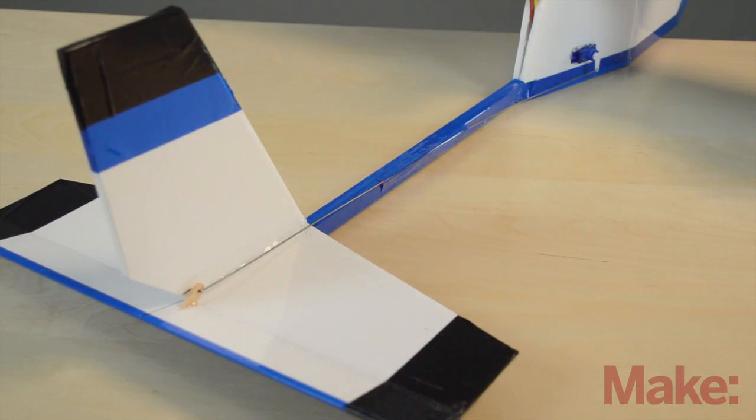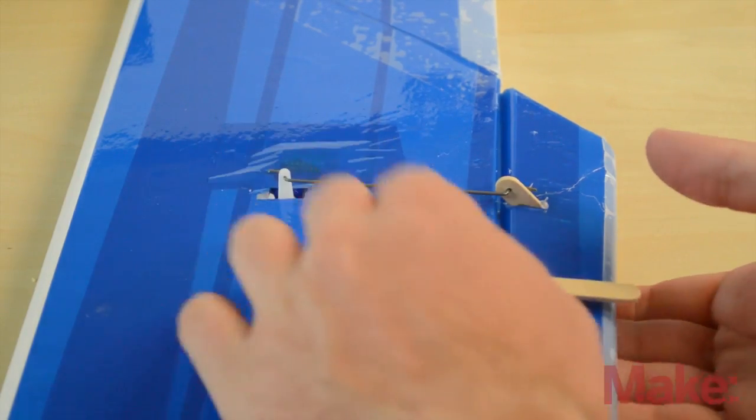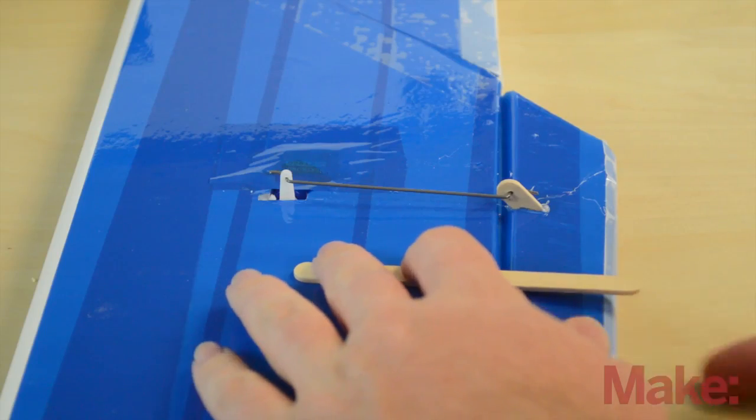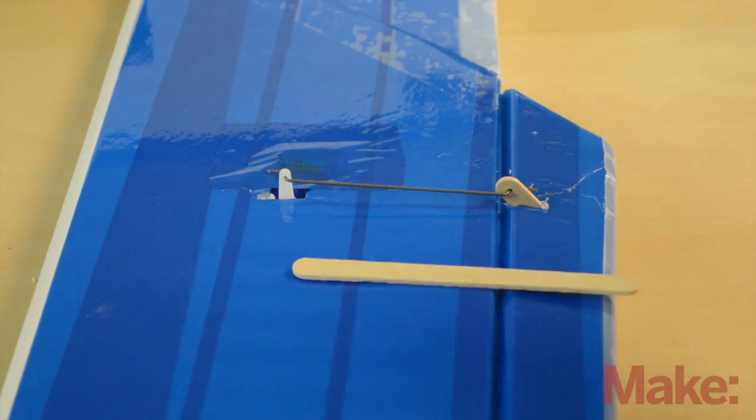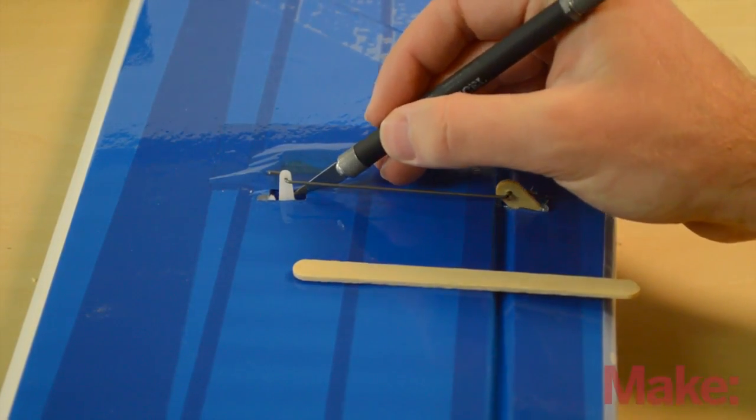Going to the ailerons, we're going to flip the plane over. We can put our popsicle stick back on and we see that it's facing a little bit too far down. So I'm going to come in here with my X-Acto knife and pop off the servo arm.